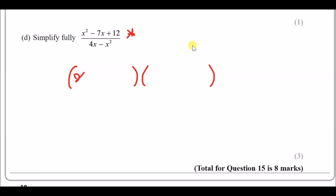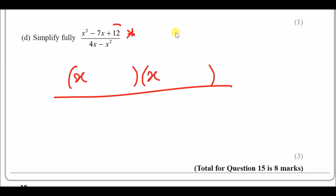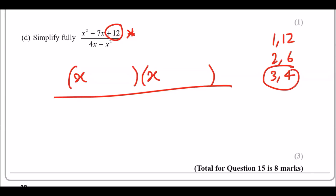To figure out the remaining terms, we need two numbers that multiply to make 12. The options are 1×12, 2×6, or 3×4. One of these pairs must also give a sum or difference of 7. Looking at the numbers, only 3 and 4 can make 7, and to get minus 7 we need -3 and -4. So the top factorises as (x - 3)(x - 4).